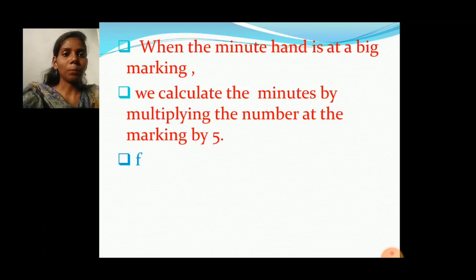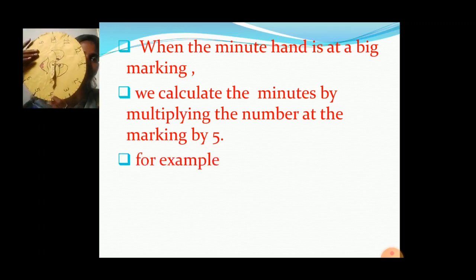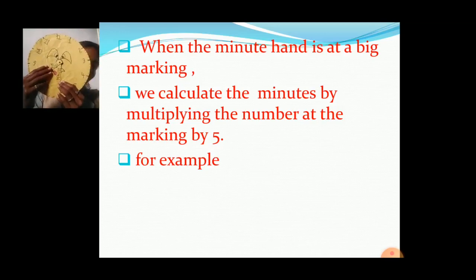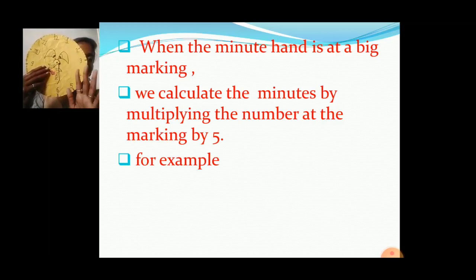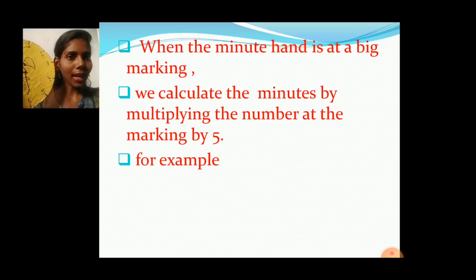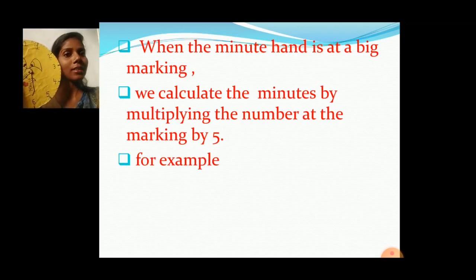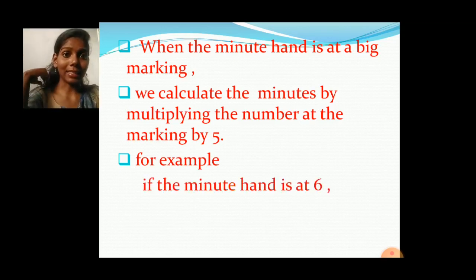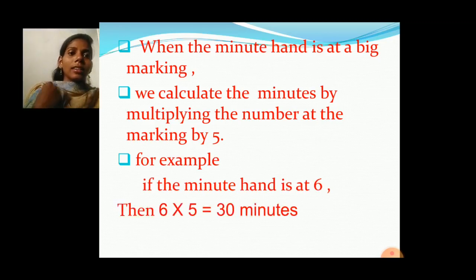For example, if the minute hand is at number 6, that time we will calculate the minutes by multiplying by 5. So, 6 multiplied by 5 equals 30. Because 6 fives are 30, 5 sixes are 30. So it is 30 minutes. If the minute hand is at 6, then 6 fives are 30 minutes.